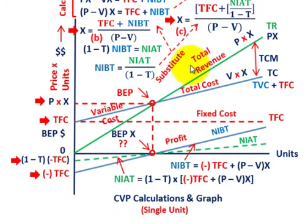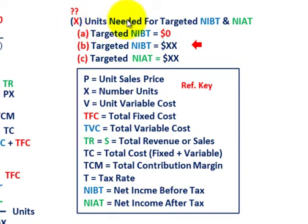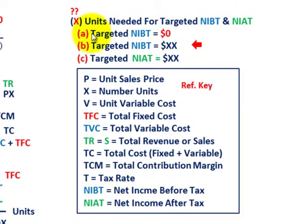Before we do that, let's look at our reference key and understand what we're doing. We have to determine the quantity of the product we're going to be selling, defined here as X — the quantity of the product. We're going to look at units needed for a targeted net income before taxes and after taxes, covering three different cases. The first case is calculating the break-even with net income before taxes set to zero, solving only for quantity X.